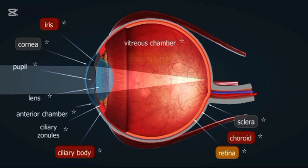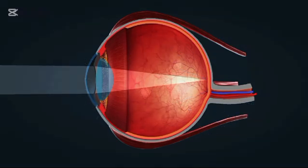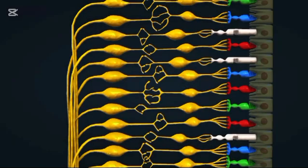The choroid is a layer of blood vessels between the retina and sclera. It provides nutrients and oxygen to the retina. The iris is the colored part of your eye. It controls the size of the pupil, regulating how much light enters the eye.